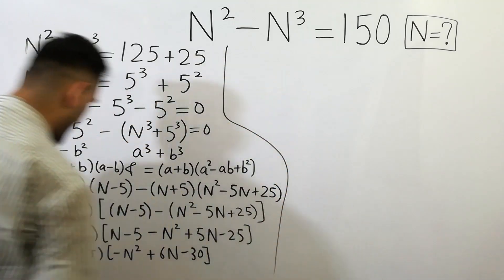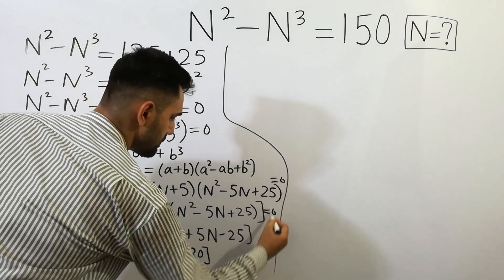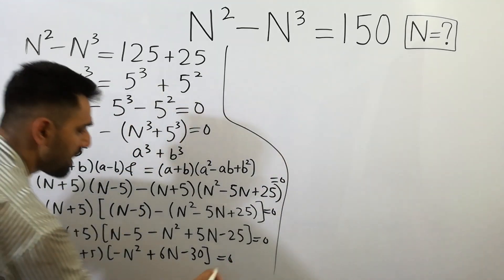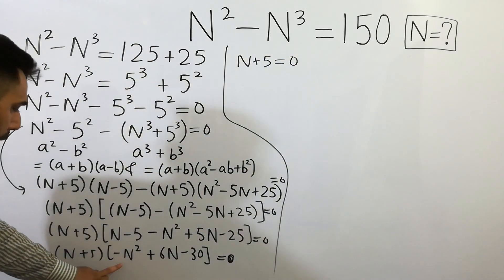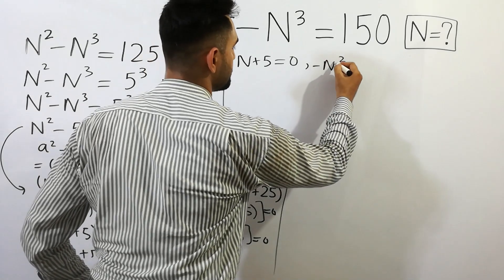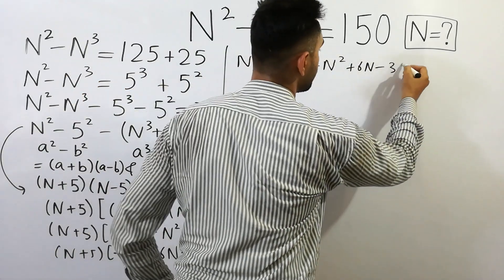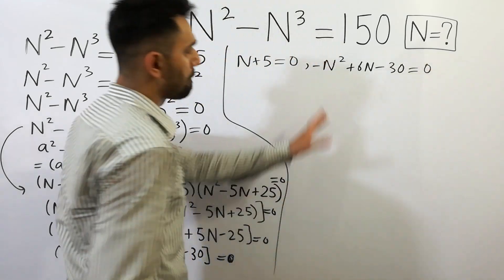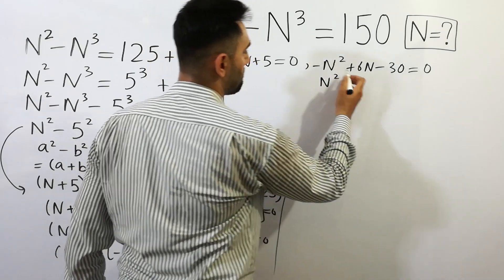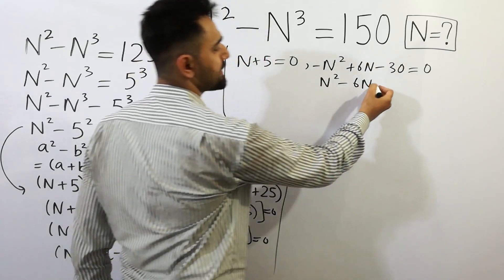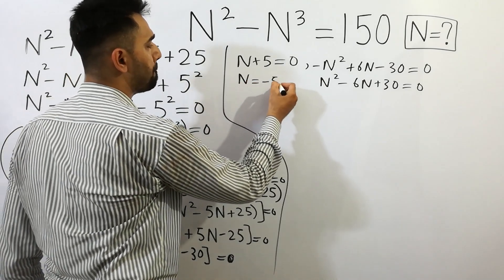We have n plus 5 equals to 0, and next: negative n squared plus 6n minus 30 equals to 0. By multiplying both sides by minus, we get n squared minus 6n plus 30 equals to 0, and here n equals to minus 5.